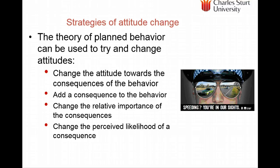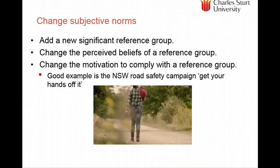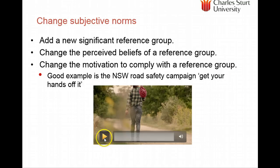The first approach is to look at the outcomes of the behaviour — the top part of the model. We can also change subjective norms by adding a significant reference group, an admired spokesperson, changing the perceived beliefs of a reference group, or changing the motivation to comply. A good example is the New South Wales road safety campaign 'Get Your Hands Off It', about not using mobile phones while driving — this advertisement addresses all three of these things.